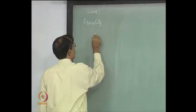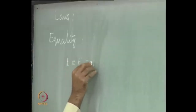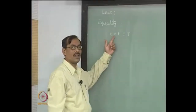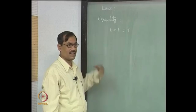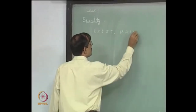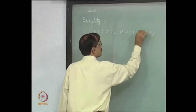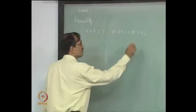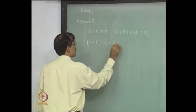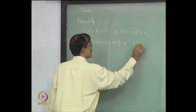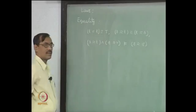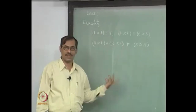In laws of equality, you will have t equal to t — this is valid. It is obvious because the equality symbol is interpreted as the equality in the domain. Some such simple things can be seen very quickly. For example, s equal to t is equivalent to t equal to s. Similarly, s equal to t and t equal to r entails s equal to r. These are all the equivalence relations — it shows equality behaves like an equivalence relation.